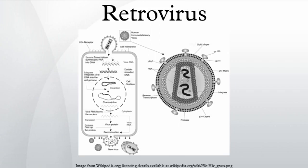Transmission occurs cell to cell, via fluids, or airborne, like the Jaagsiekte sheep retrovirus. Retrovirus genomes commonly contain three open reading frames that encode for proteins found in the mature virus: group-specific antigen codes for core and structural proteins of the virus; polymerase codes for reverse transcriptase, protease, and integrase; and envelope codes for the retroviral coat proteins.